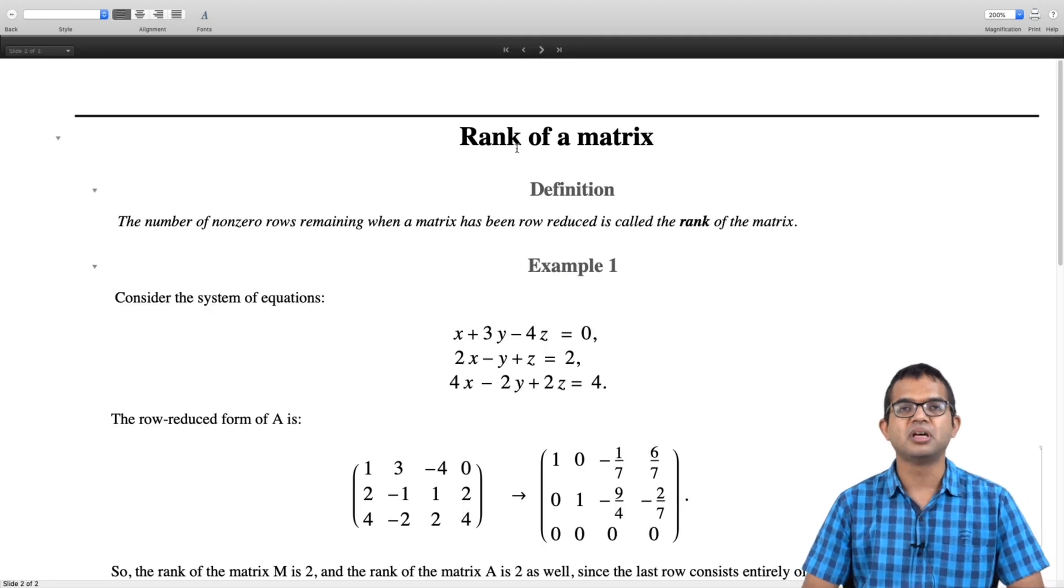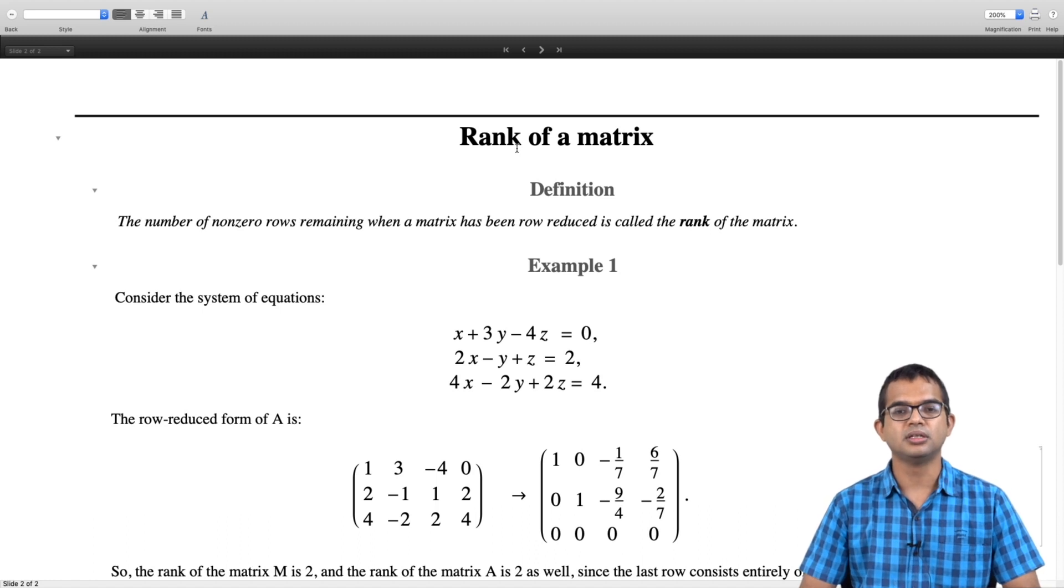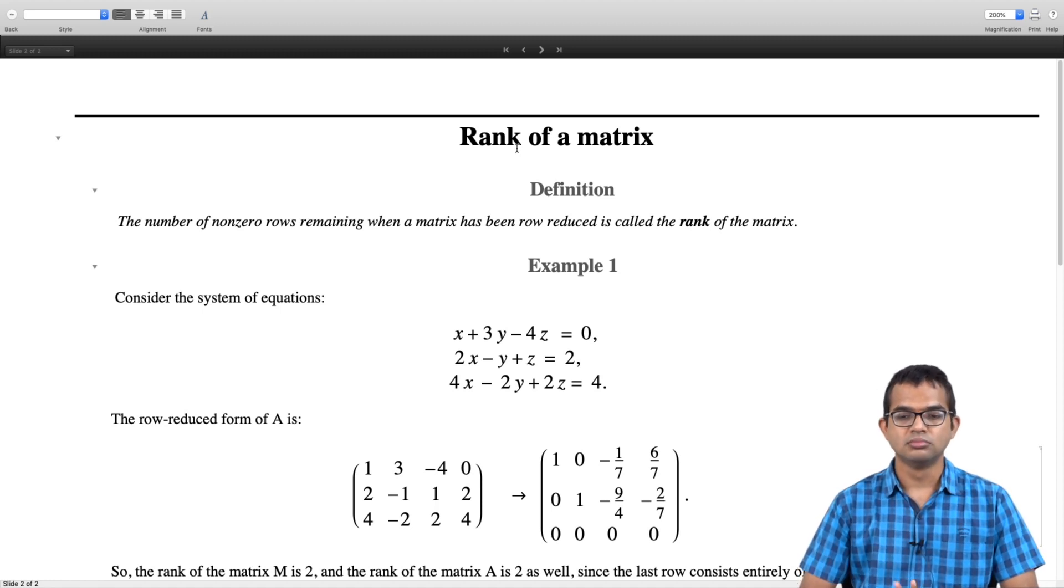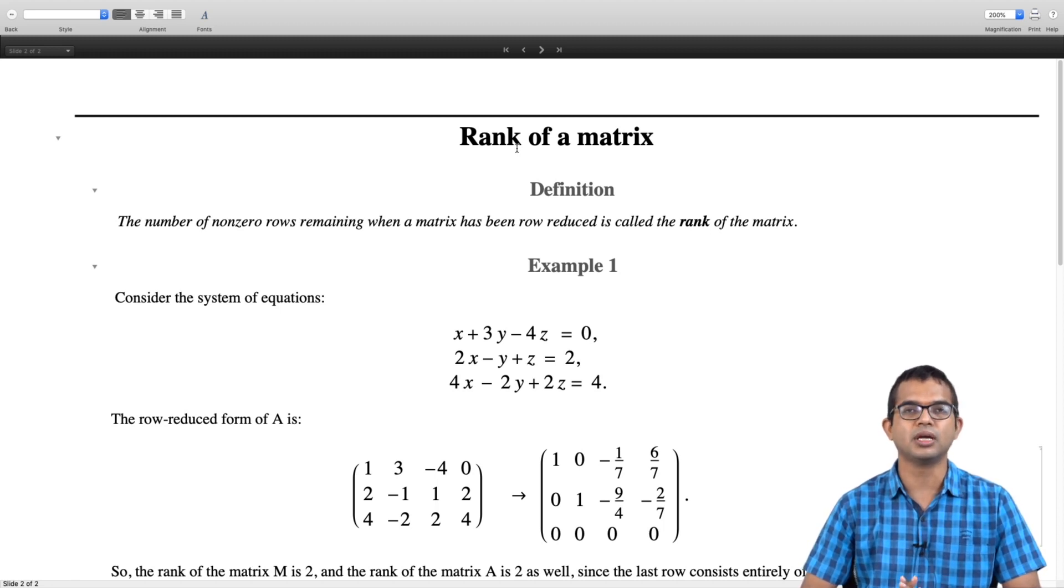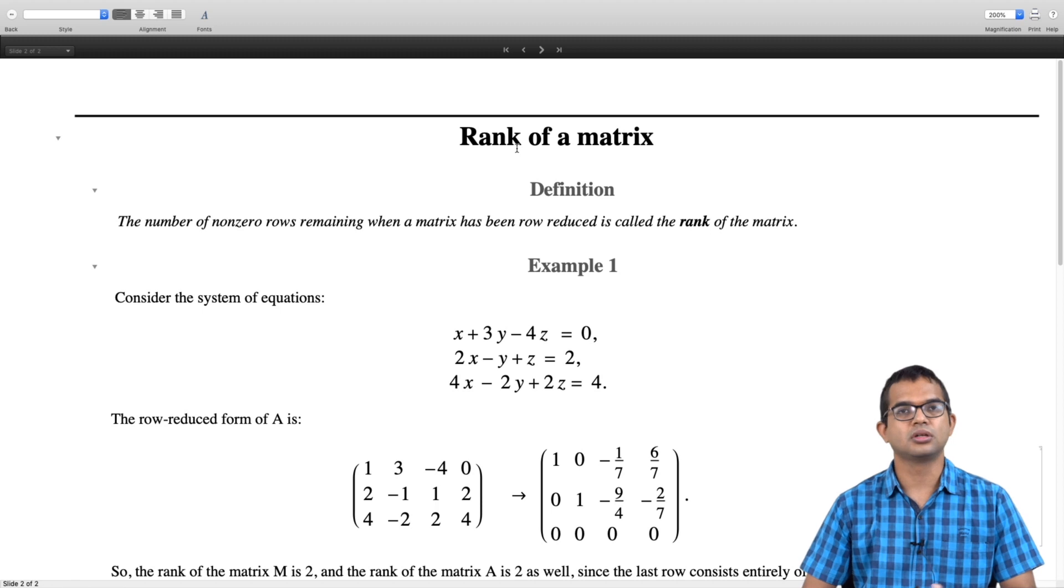The rank of a matrix is simply the number of non-zero rows remaining when a matrix has been brought into the row reduced form, the row echelon form. In the prescription, inherently all the rows which consist entirely of zeros get pushed to the bottom. So the top few rows which remain which are not entirely zeros, the number of such rows is the rank of a matrix.